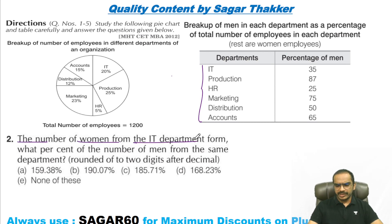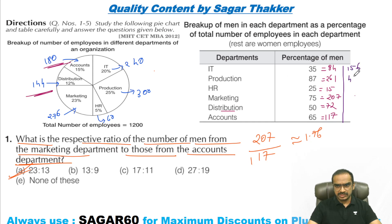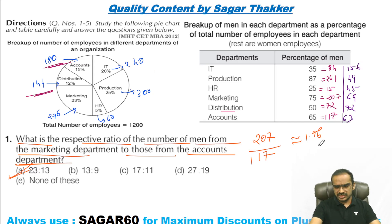The number of women from the IT department — let's write the number of women from each department: IT is 156 minus 84 equals... The values are: 49, 45, 207, 69, 72, and 117 — that is 63. So this is the total number of women we have.